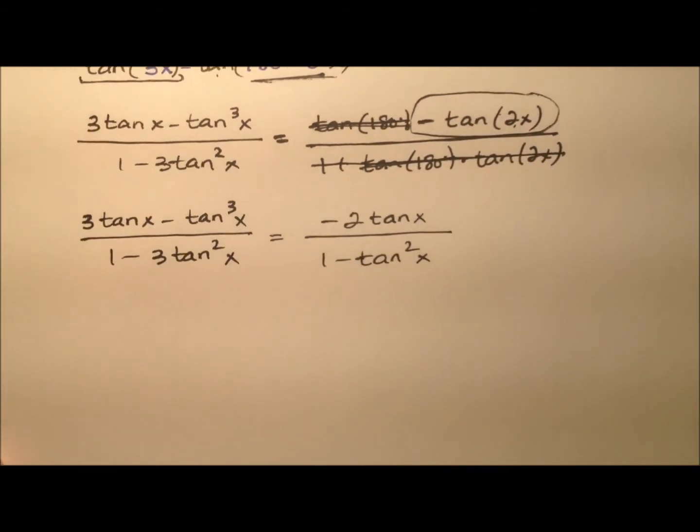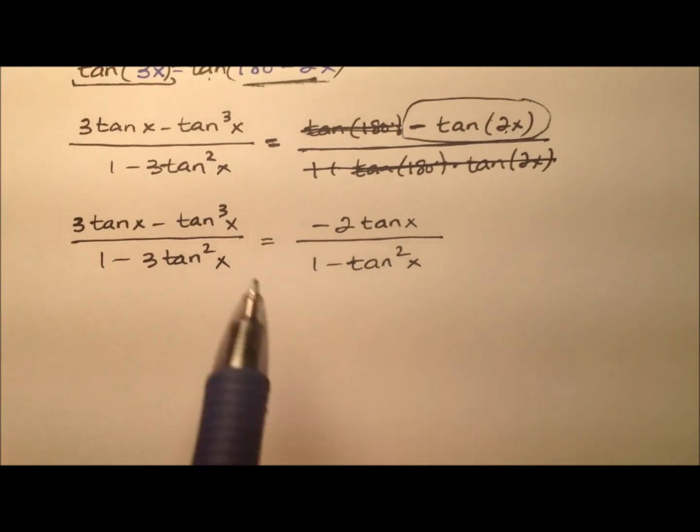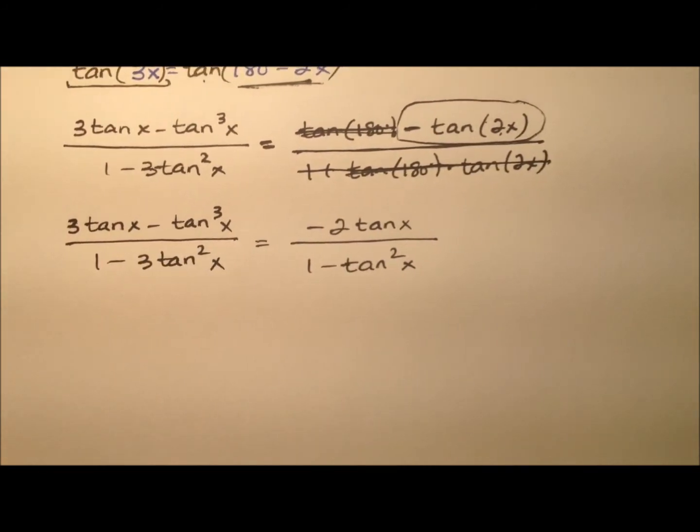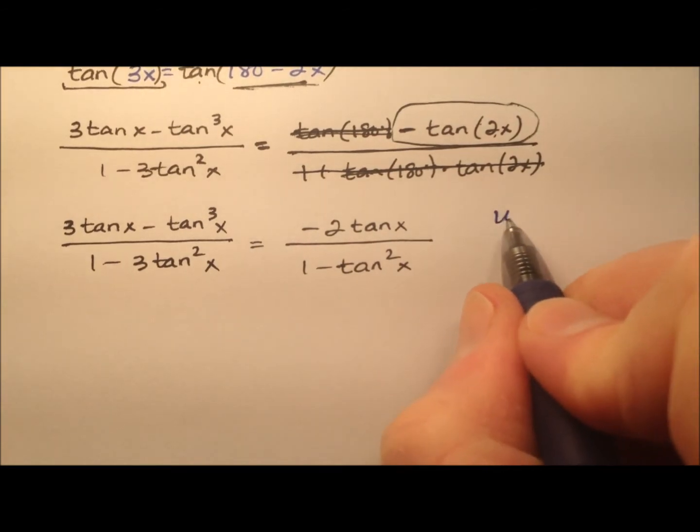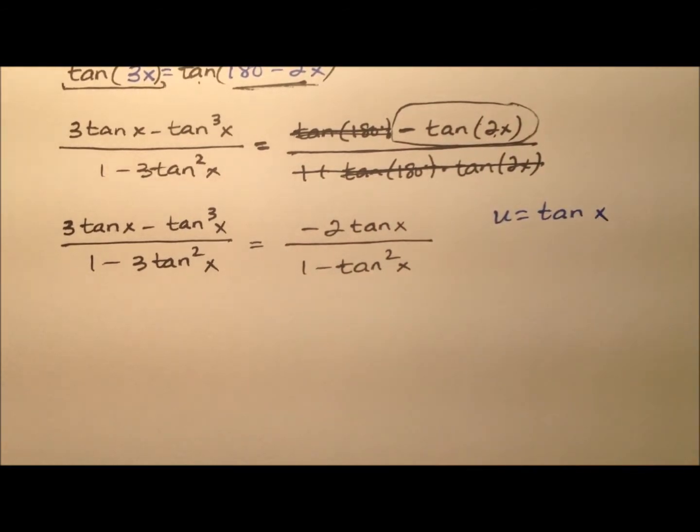And now I'll put this negative 2 tangent x over 1 minus tangent squared x. Okay, so here's where we are right now. I'm going to make a substitution at this point, just so we don't have to keep writing tangent over and over again.